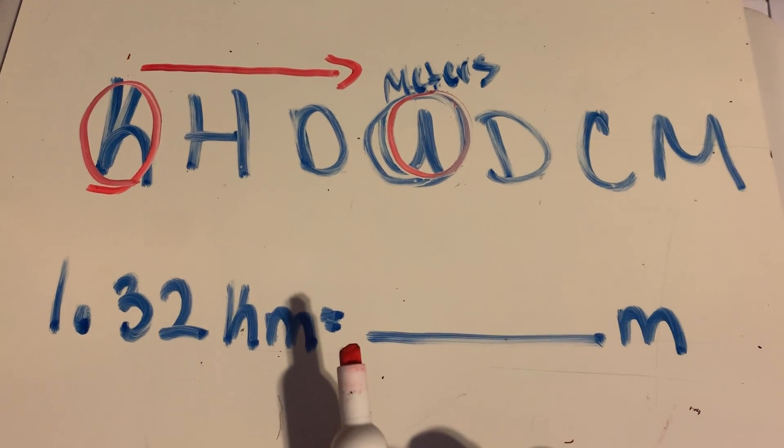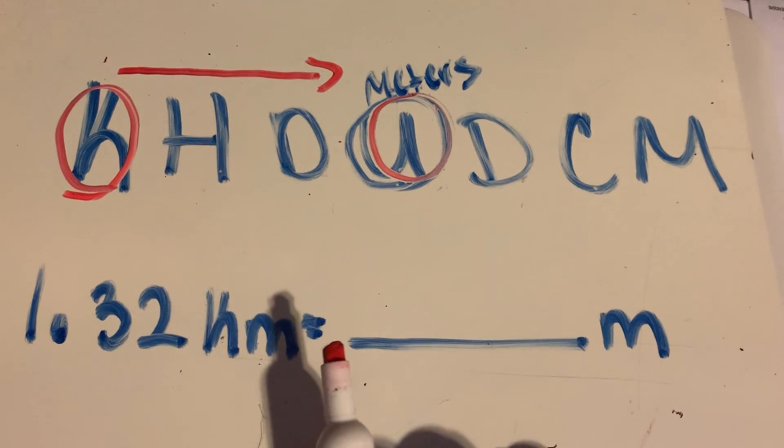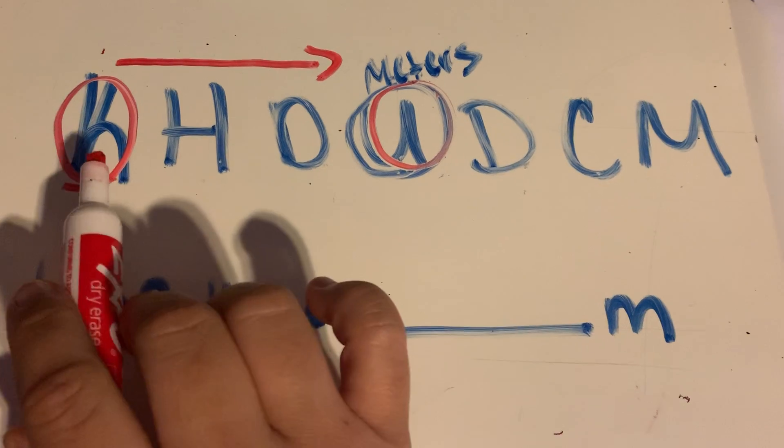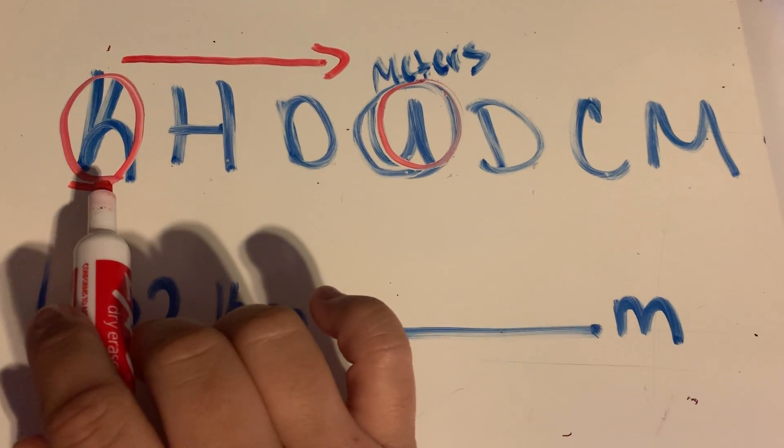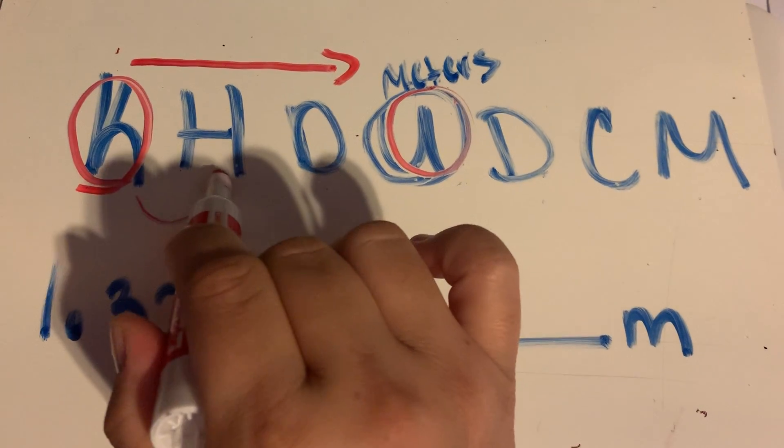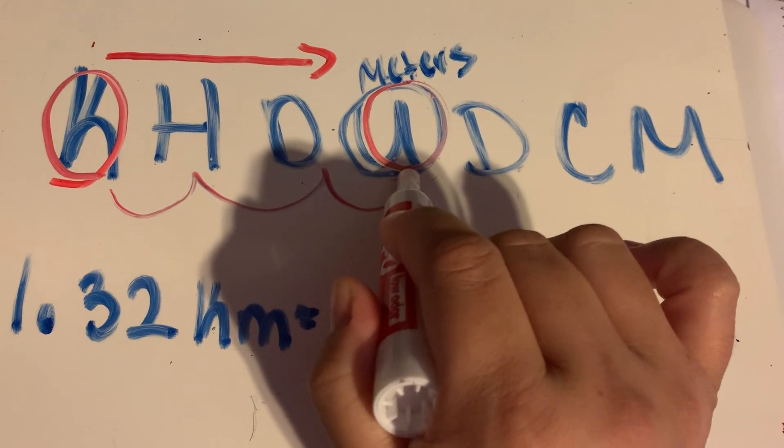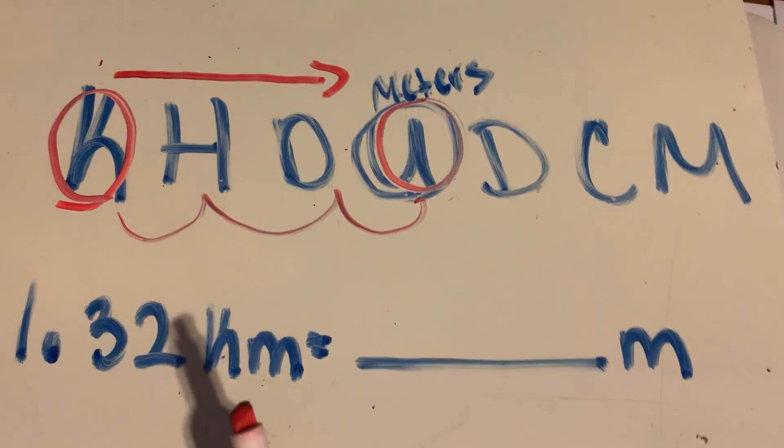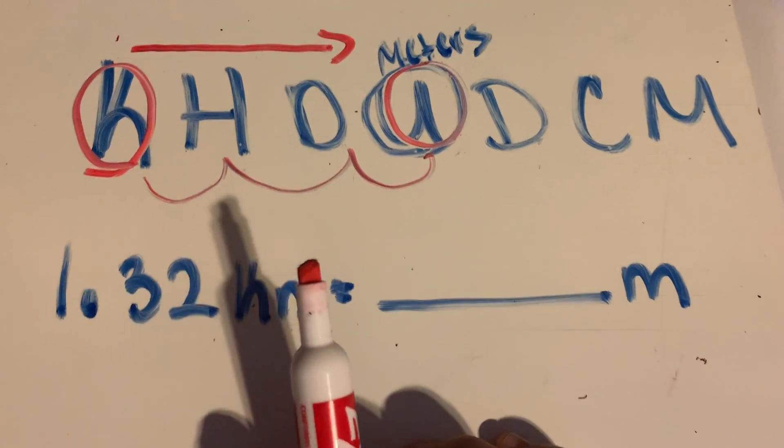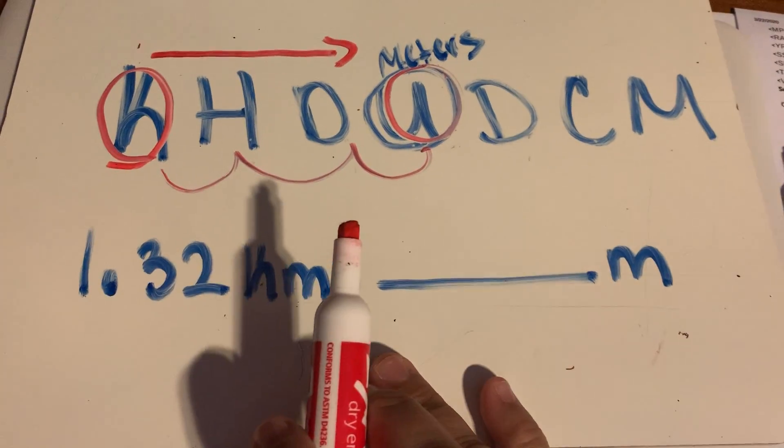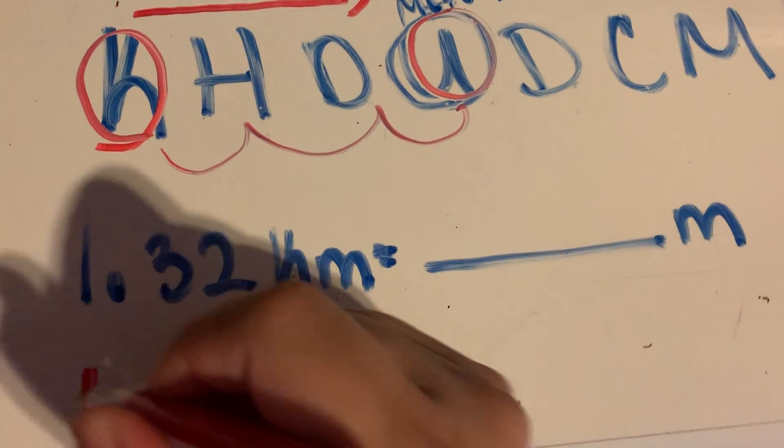So now the next question we want to ask ourselves is, well, how many places am I moving? So I'm going to start at kilo. Let's see how many places I'm moving. I'm going one, two, three. So if I'm moving three places up there, how many places do you think I'm going to have to move down here? I'm going to have to move three places. If you guessed that, you are correct.